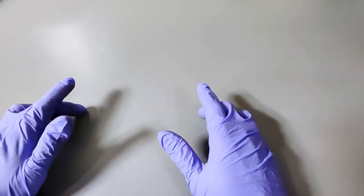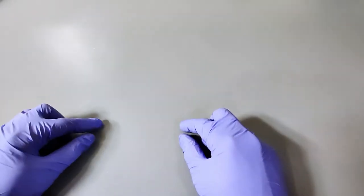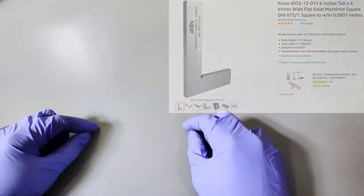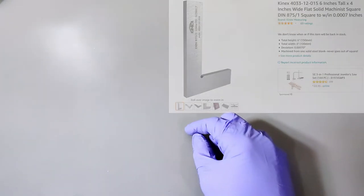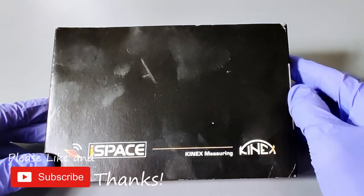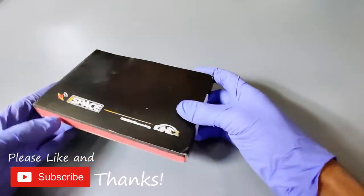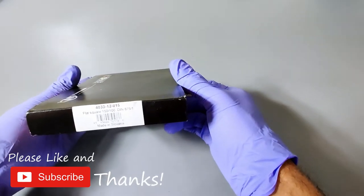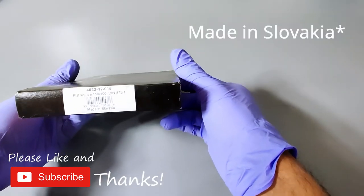Hey, what's going on everybody? So in this video, we're going to be reviewing a machinist square, and it's going to be this ispace Kinex measuring square. And so let's go ahead and unbox this thing, made in Slovenia.